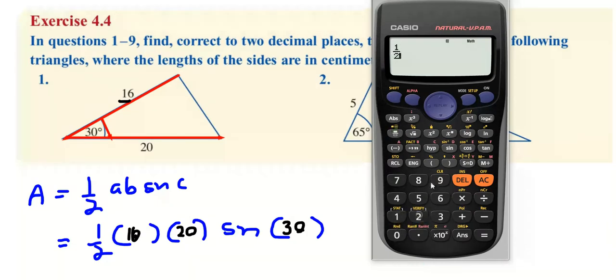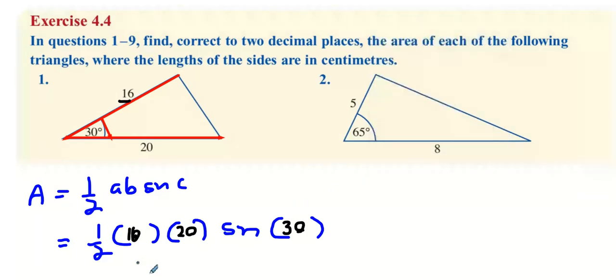You do one half times 16 times 20, then sine 30, and what you get is 80. So this is going to be 80 centimeters squared. So that's question one done.